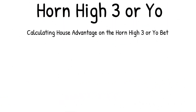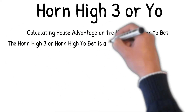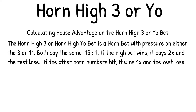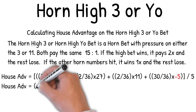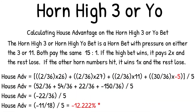Calculating house advantage on the Horn High Three or Yo bet: this is a Horn bet with pressure on either the three or eleven; both pay the same 15 to one. If the high bet wins it pays two times and the rest lose; if other Horn numbers hit it wins one time and the rest lose. House advantage equals two out of 36 times 26 for the two and twelve, plus two out of 36 times 27 for the Horn High three or yo, plus two out of 36 times 11 for the non-high three or eleven, plus 30 out of 36 times minus five. Add those together, divide by five dollars: 52 + 54 + 22 minus 150 out of 36, divided by five, equals minus 22 out of 36 divided by five, equals minus 12.22% house advantage.